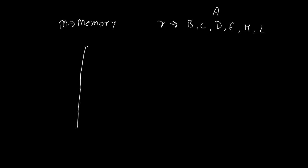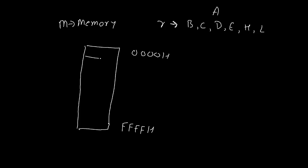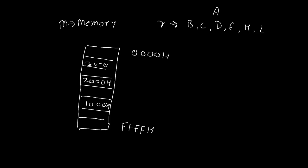Now, what is memory? Memory will have a range between FFFFH up to 0000H. So this kind of memory is there. Somewhere in between, you will get 1000H memory, then this address will be 2000H memory, this address is 3000H memory, and so on. So this is the memory range that we can see.